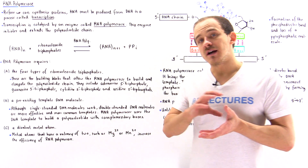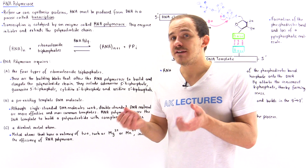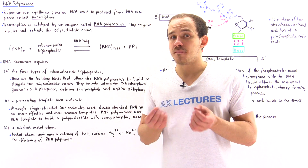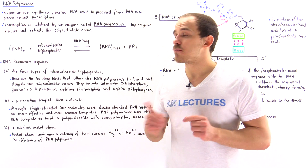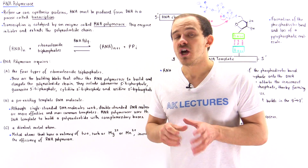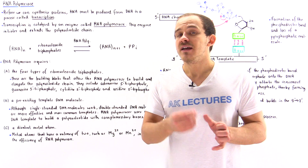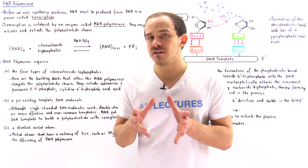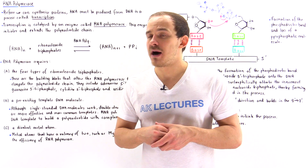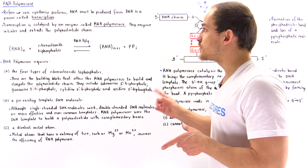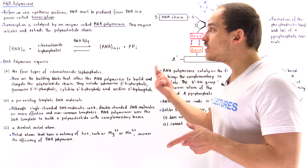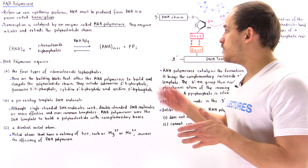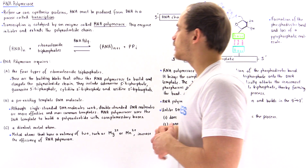Just like the process of DNA replication involves a protein known as DNA polymerase that catalyzes the formation of a phosphodiester bond, in the process of transcription, when we form the RNA from the DNA, there is a protein known as RNA polymerase that catalyzes the formation of the phosphodiester bond. RNA polymerase catalyzes the initiation and the elongation of that RNA polynucleotide chain. Let's take a look at the following diagram.